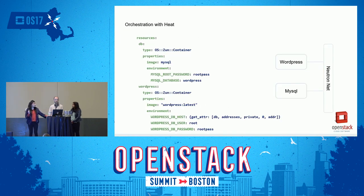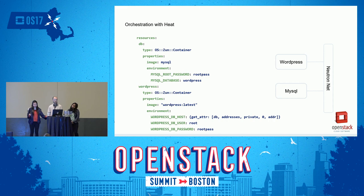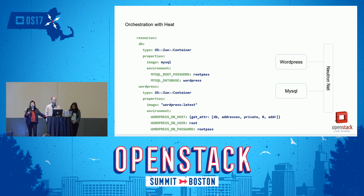For orchestration with Heat, we do the same thing but using a Heat template. We define two resources: one is the DB (MySQL) and another is WordPress. The resource type is OS::Zun::Container. We set properties including the image (MySQL) and environment variables. For the WordPress web server container, we set the environment variable by fetching the IP address of the container we want to communicate with, so it will fetch that IP address and communicate with the container.